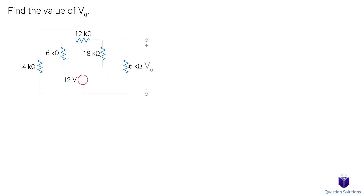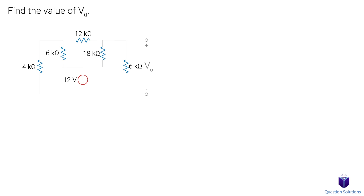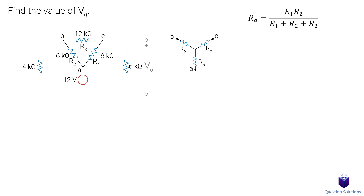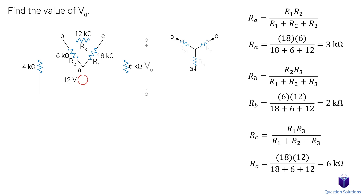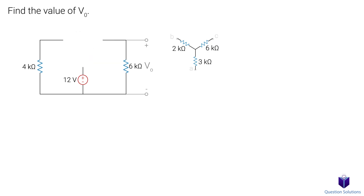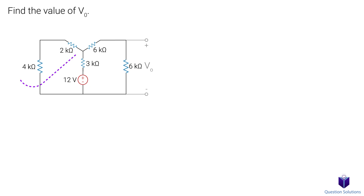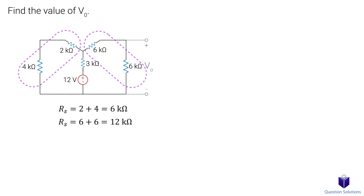Let's take a look at this question where we need to figure out the value of V-naught. Looking at the circuit, we can see that these resistors are in a delta formation. If it's hard to see, let's move these conductors like this and that should make it easier. So let's label our points. On the side, we will draw the Y and label its points. Next, it's just a matter of using the equations to get the values of our resistors. Now that we have the new values, we can replace our delta with the Y. Looking at our new circuit, these two are in series and so are these two, so let's add them together.